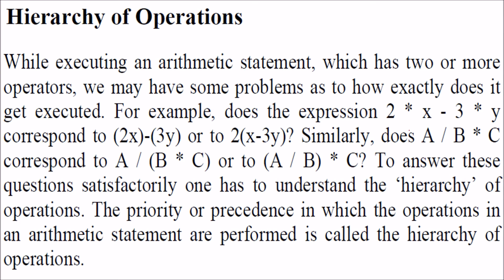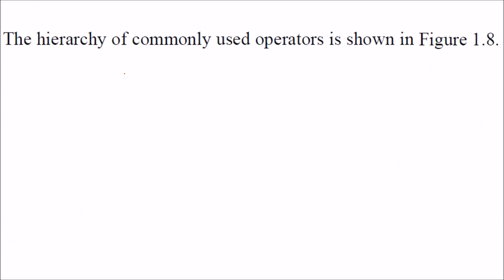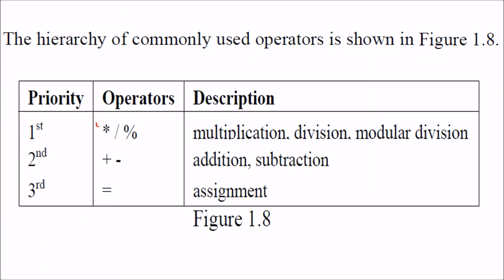Hierarchy of operations: when you have an expression like 2*x minus 3y, we need to know which operation is computed first. We need a proper hierarchy. The hierarchy is: multiplication (*), modulo (%), and division (/) have the highest precedence. Before those, we have round brackets. Then come plus and minus, and then assignment.